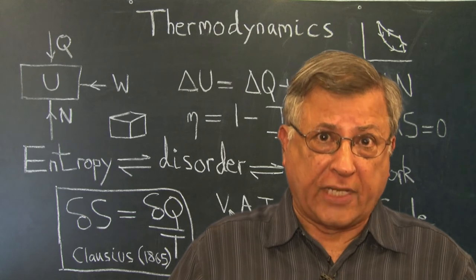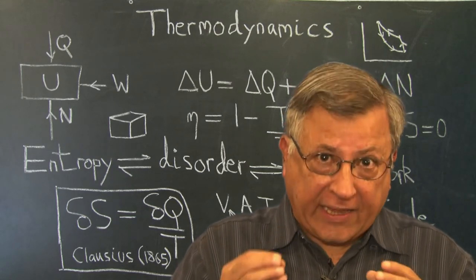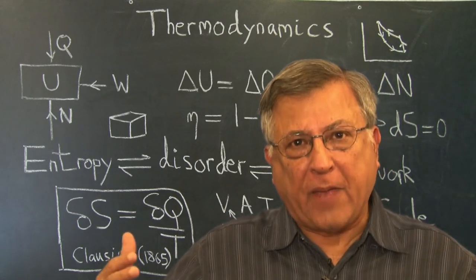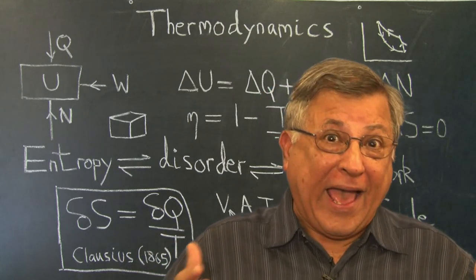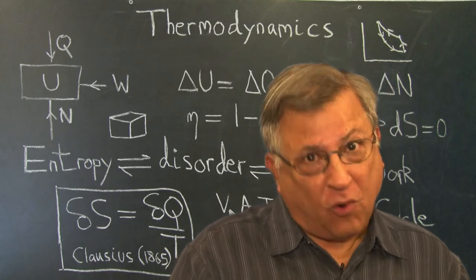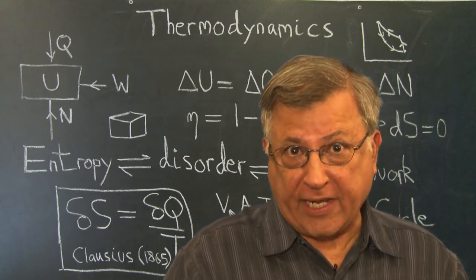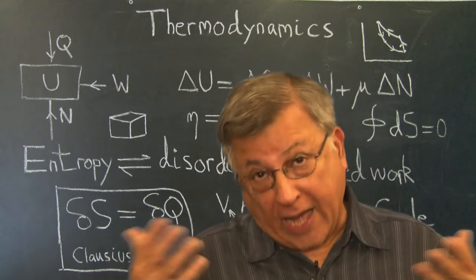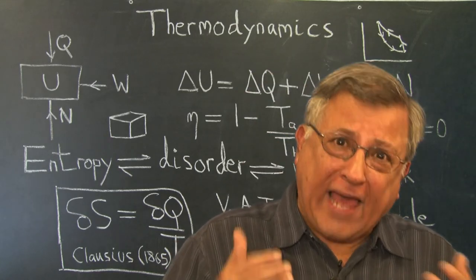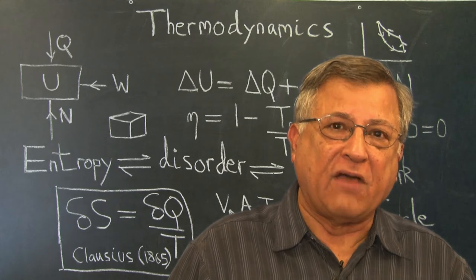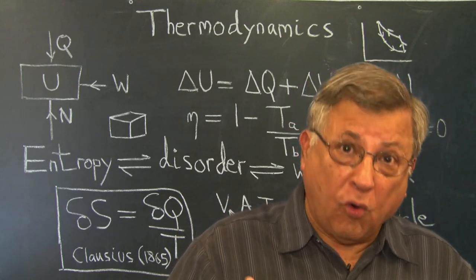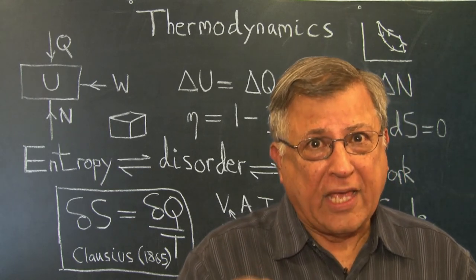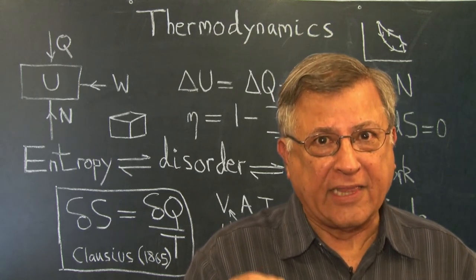Then in a very surprising move we'll consider the universe as a whole. The universe started off as a Big Bang, which led to the emission of blackbody radiation. As the universe expanded, that radiation cooled and is present today as cosmic microwave background radiation. This connects the expansion of the universe — governed by Einstein's equations — to classical thermodynamics discovered more than a hundred years before Einstein.